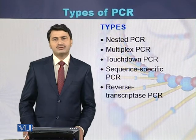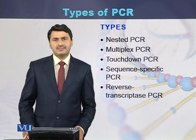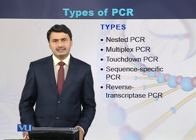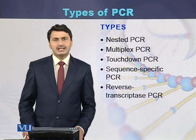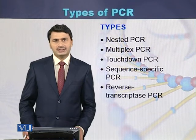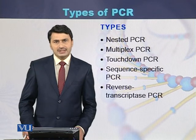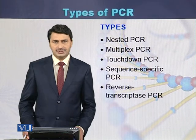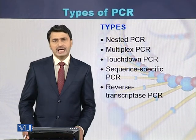For example, during the first cycle the annealing temperature might be 62 degrees centigrade, during the second cycle it can be 61, and during the third cycle it can be 60. So touchdown PCR is a PCR in which we decrease the annealing temperature of the primers with each successive cycle.